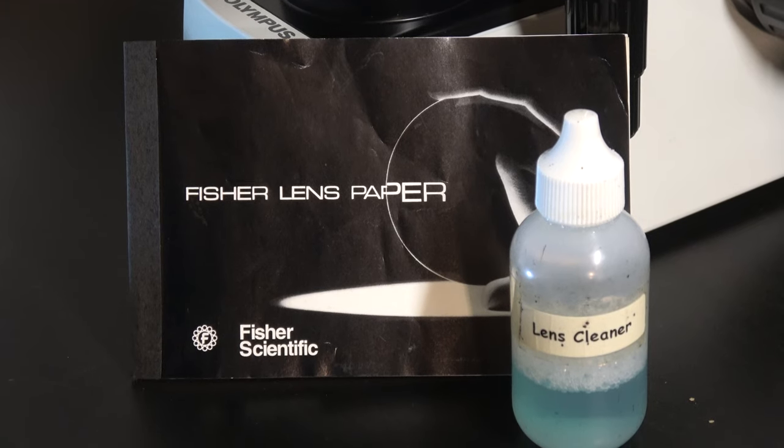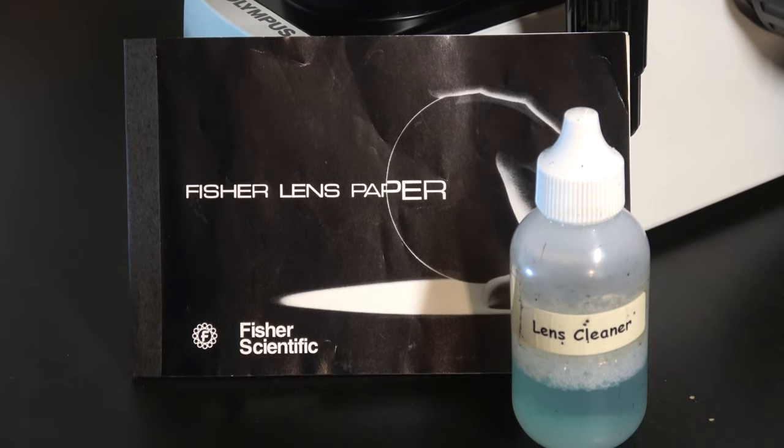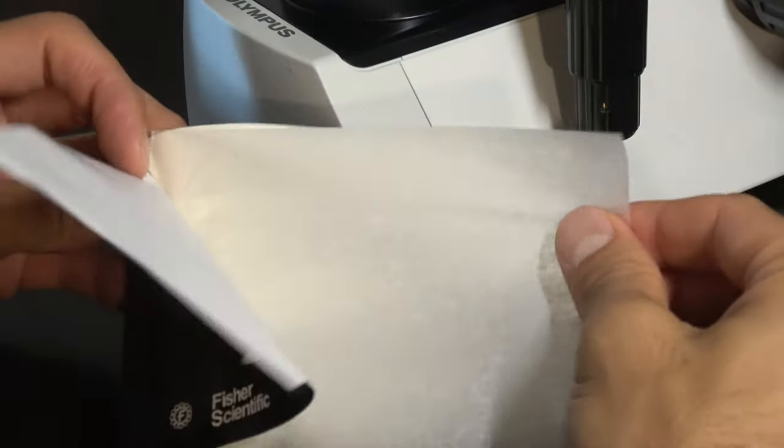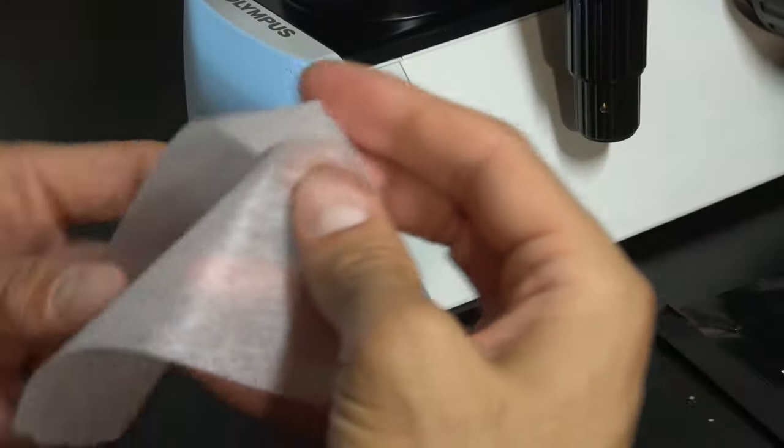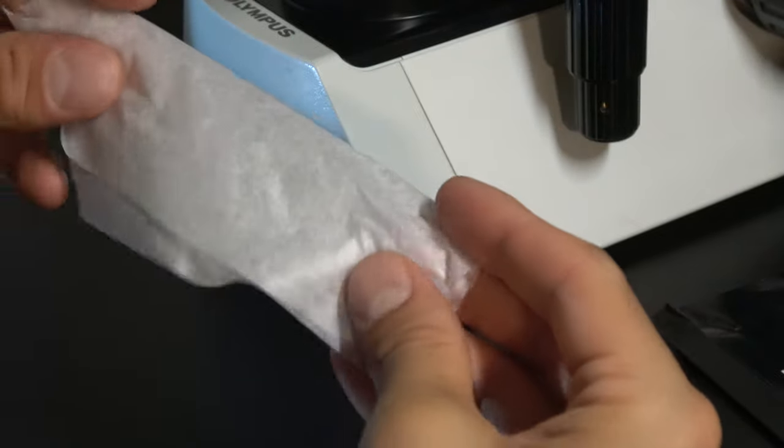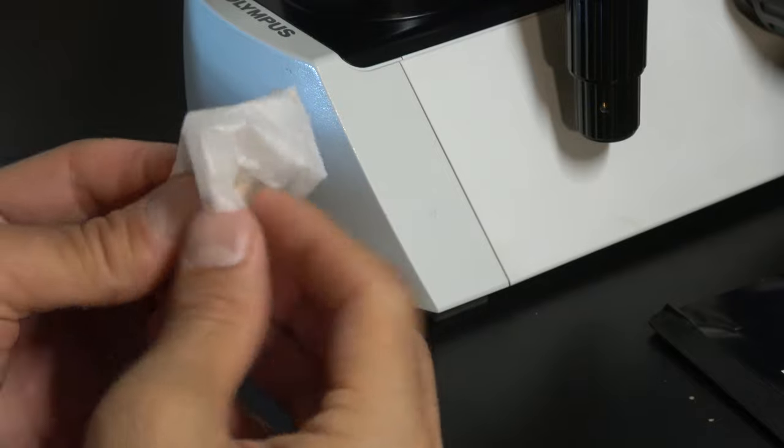For the objectives, it is imperative that you use lens paper only. Paper towels and chem wipes can scratch the lenses. Pull a leaf of lens paper out and avoid getting oils from your hands on the region where you will clean the lens with.